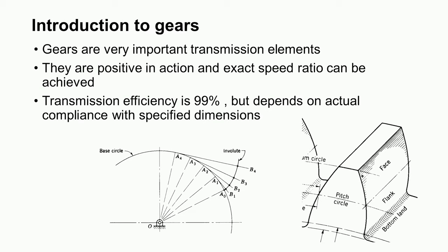Gears are very important transmission elements used to transmit power. They are positive in action, meaning there is no slippage. In the case of belt drive there is a chance of slippage, whereas in gear drive it is positive transmission and an exact speed ratio can be achieved. Transmission efficiency in the case of gears is almost 99 percent, but it depends on actual compliance with the specified dimensions of the gear.